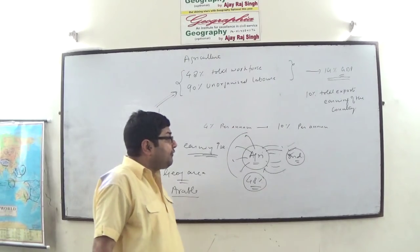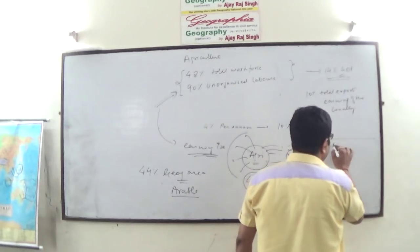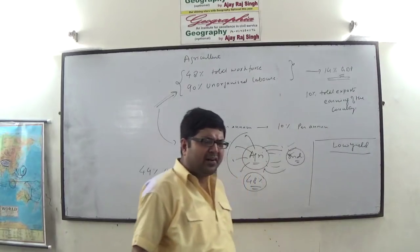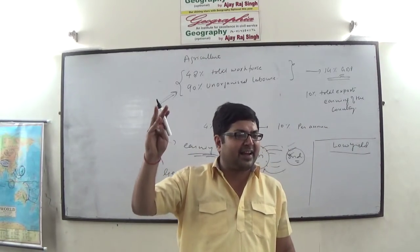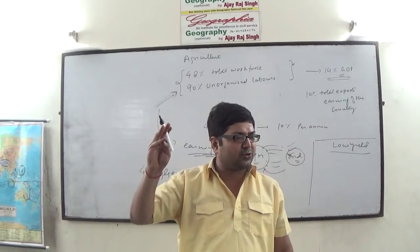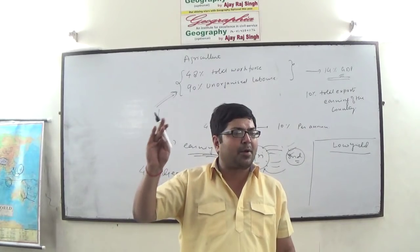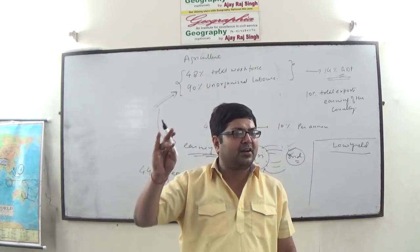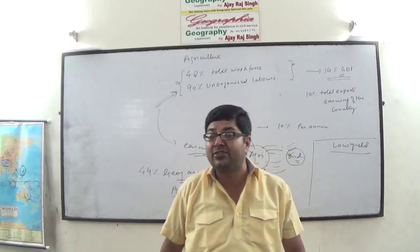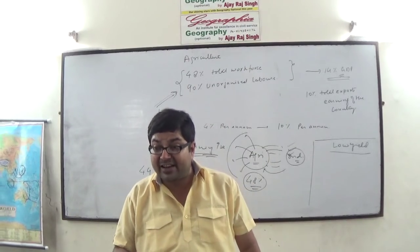In India, the only factor hindering the growth of agriculture is low yield. India has the largest area under wheat in the world, largest area under rice, largest area under sugar cane, largest area under tobacco, and largest area under cotton. Despite that fact, India is not the largest producer of any of these crops. Why is the yield of agriculture low?